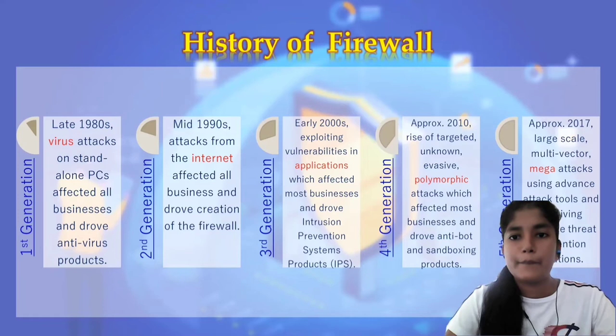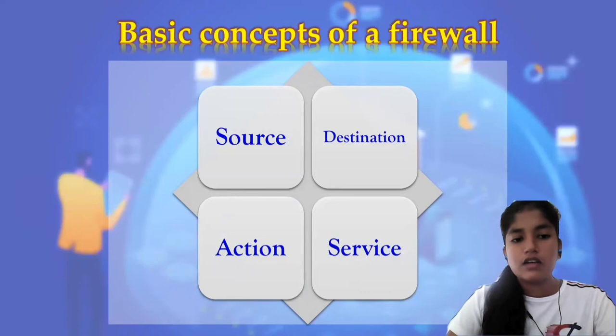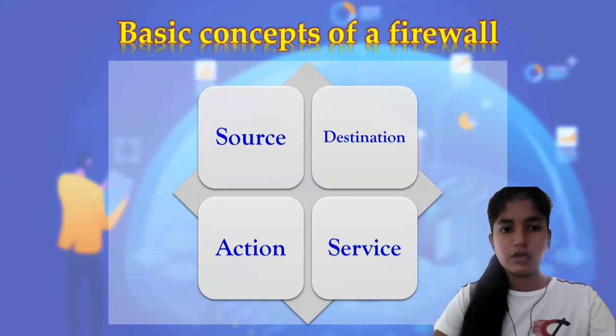There are four basic concepts in firewall: source, destination, action, and service. Source is the computer that the packet comes from — for inbound traffic the source is the remote host, for outbound traffic the source is the local host. Destination is the computer that the packet goes to — for inbound traffic the destination is the local host, for outbound traffic the destination is the remote host.